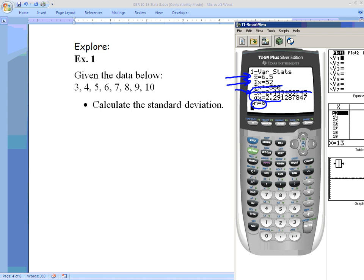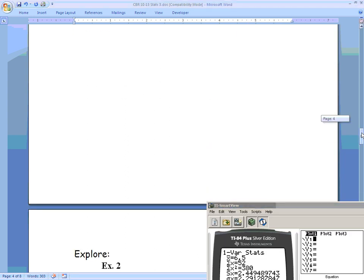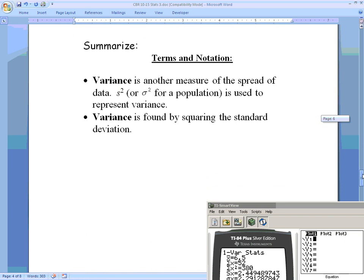Before the next example, a little bit of additional terms and notation. Variance is another measure of the spread of data. S squared or lowercase sigma squared is used to represent variance. So variance is found by squaring the standard deviation. You'll notice that s and sigma are the symbols we use for standard deviation, and when we square it, that gets us variance. On the last problem, we had 5.25 equal to the variance, and we square rooted it and got 2.29 approximately.